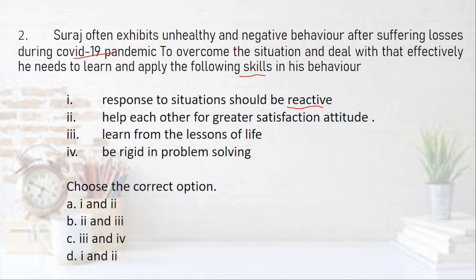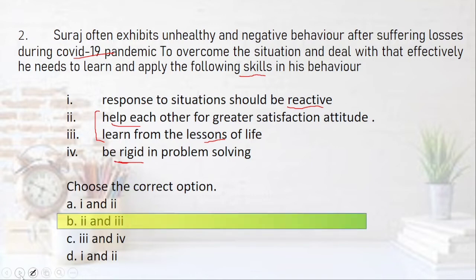There is a common tendency that when we read the choices, we already have some basic image in mind and assume the options. You have to be very clear — it is the exact word, not an assumption. So the option says he needs to be reactive — that is wrong. 'Help each other for greater satisfaction' — whenever you have something positive, it will always be right. 'Learn from the lessons of life' — this is also a universal truth. 'Be rigid in problem solving' — no, that is not the right answer. So options two and three are correct. Whenever attempting this type of question, first find out the right options from those given, and then see whether that combination is available — this increases your probability of answering correctly.